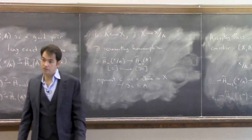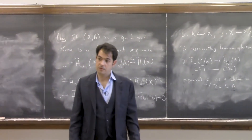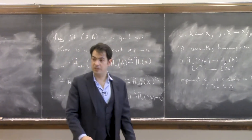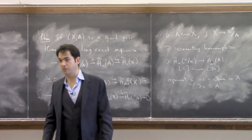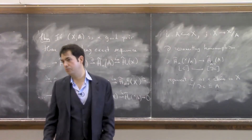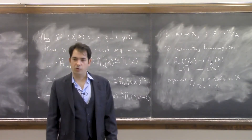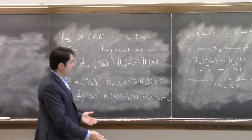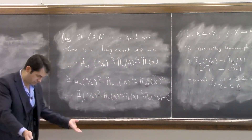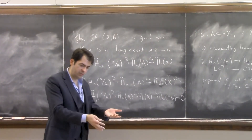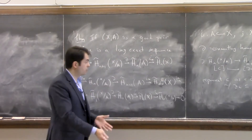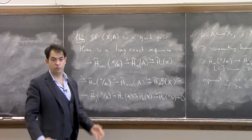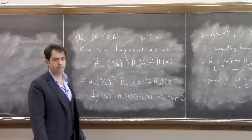Mayer-Vietoris is also a long exact sequence in homology, but a different one. It's like the Seifert-van Kampen theorem for homology: you have a cover of a space by two open sets, and you get a long exact sequence relating the homologies of the open sets, their intersection, and the total space.